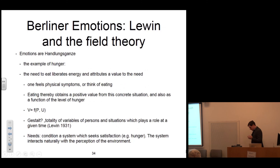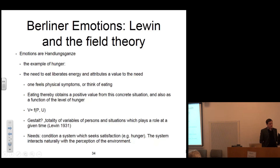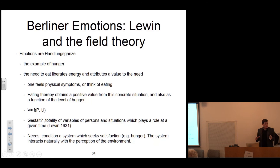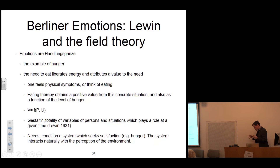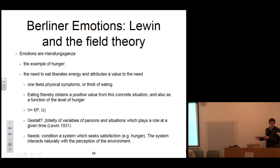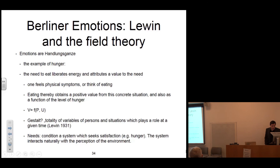The Berlin theory of emotions is, not surprisingly, a dynamical theory. Emotions are considered as wholes of action — Handlungsganze. For example, if we take hunger according to Lewin's theory of emotions, the need to eat liberates energy and attributes a value to the need: one feels physical symptoms or thinks of eating, and eating thereby obtains a positive value from this concrete situation and as a function of the level of hunger. So the emotion is considered as a vectorial force, formulated as V, which is a function of the person and its environment — person and Umfeld. The Gestalt is the totality of variables of persons and situations which plays a role at a given time.